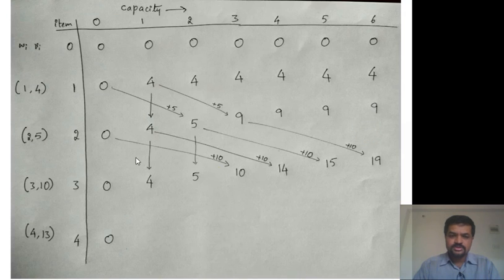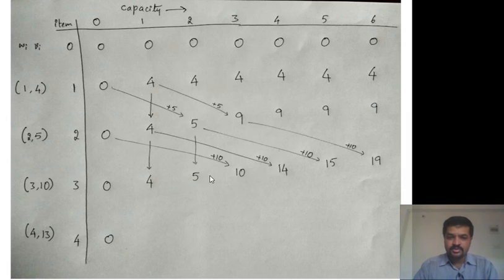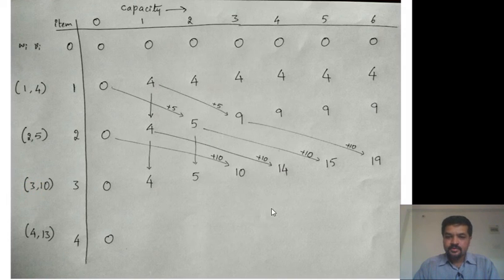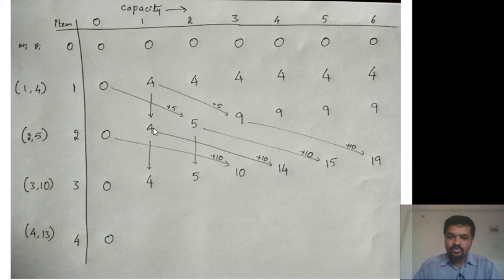When the third row is introduced, the third item has weight 3. So for f(3, 1) and f(3, 2) we just copy from the previous row — 4 and 5 — because the third item cannot be used with capacity less than 3. At f(3, 3) we have a choice: either go with 9 (not choosing third item) or choose it — value 10 plus f(2, 0) = 0, giving 10. Since 10 > 9, we choose 10. For f(3, 4): max of 9 and (10 + f(2, 1)) = 10 + 4 = 14, so 14.